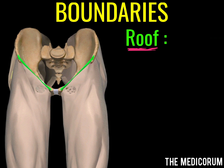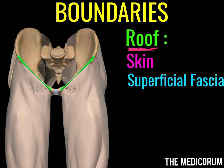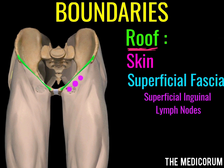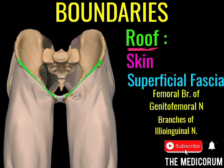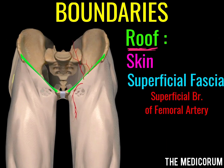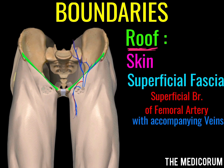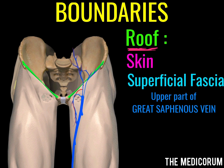The roof of the femoral triangle — we will remember it by visualizing the dissection. As we dissect the lower limb, we will first see the skin, then the superficial fascia. In the femoral triangle, the superficial fascia contains some of the superficial inguinal lymph nodes, the femoral branch of the genitofemoral nerve, some branches of the ilioinguinal nerve, superficial branches of the femoral artery along with accompanying veins, and the upper part of the great saphenous vein.